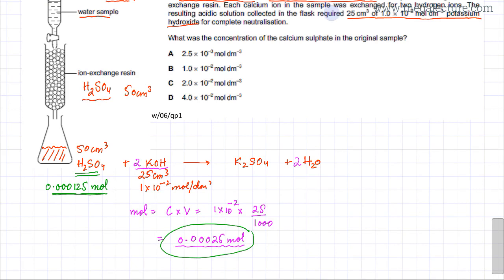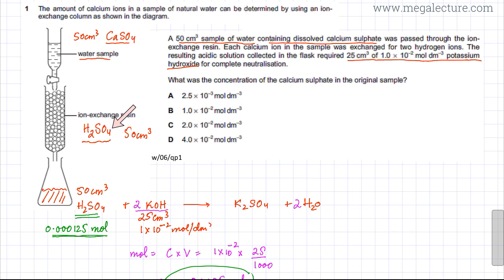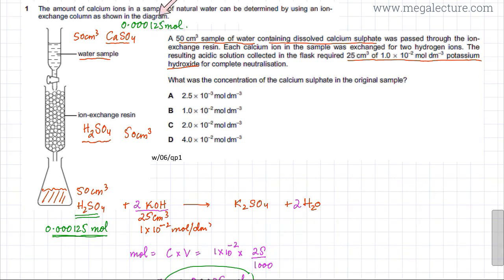Since one calcium sulphate was converted into one H₂SO₄ in the ion exchange chamber, the mole ratio of CaSO₄ to H₂SO₄ is 1:1. Therefore, the moles of calcium sulphate are also 0.00125 moles. We already know the volume of the CaSO₄ solution is 50 cm³.